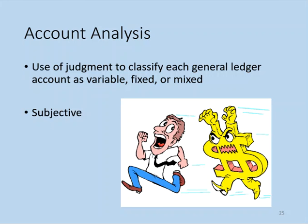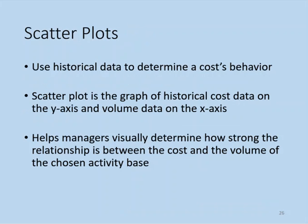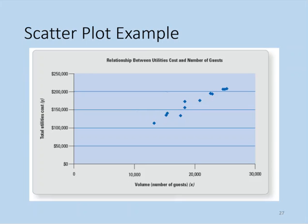Scatter plots use historical data to determine cost behavior. A scatter plot is a graph with cost data on the y-axis and volume data on the x-axis. The resulting graph helps managers visually determine the strength of the relationship between the cost and the volume of the chosen activity base. Plotting points of cost and volume visually expresses the cost relationship.